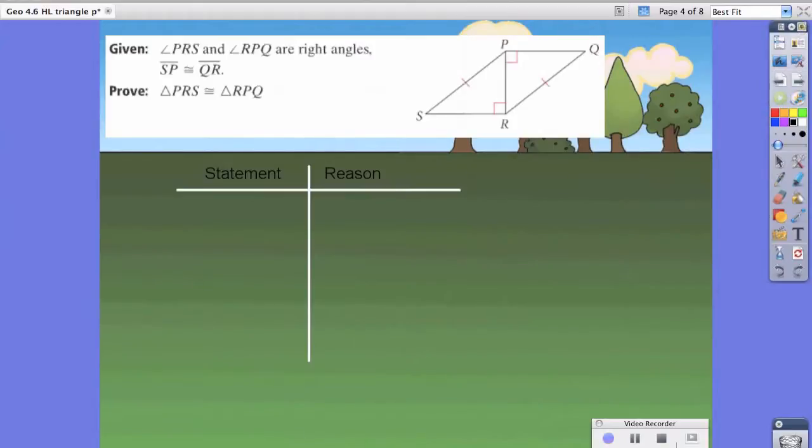So let's try an example. For this example, we have given: angle PRS and angle RPQ are right triangles, and line segment SP is congruent to line segment QR. With that said, we can start our proof.